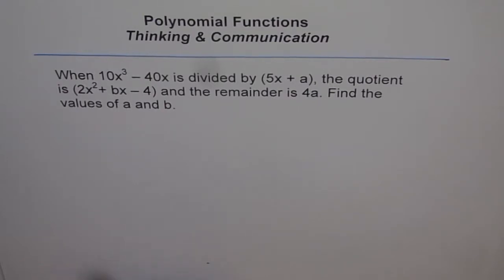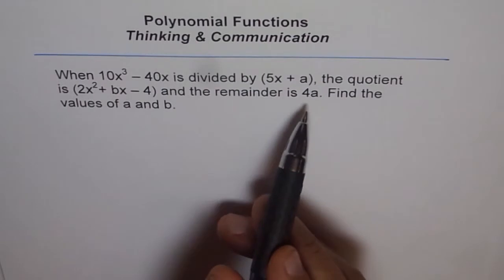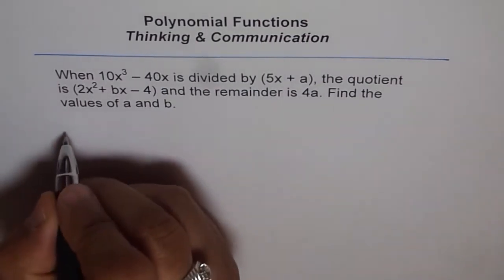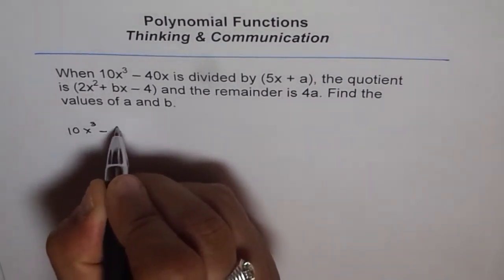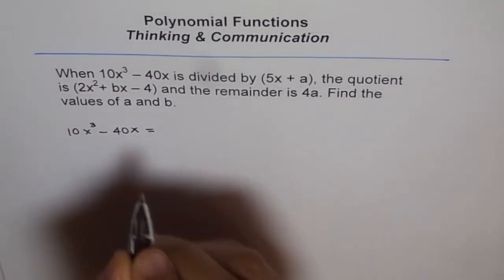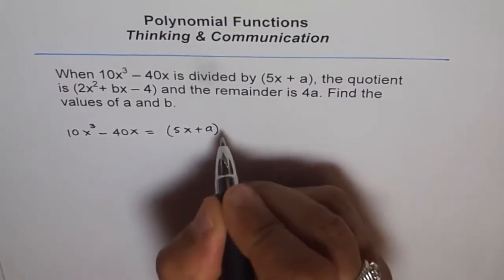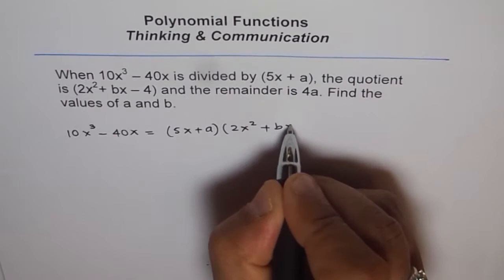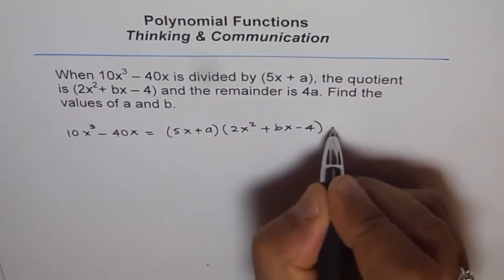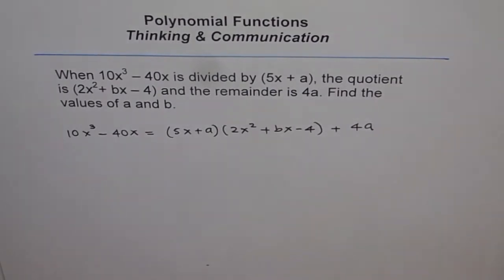Let's use the division statement. When this is divided by this, quotient is this and remainder is that. That means our equation is that 10x³ - 40x is equal to (5x + a) times (2x² + bx - 4) plus the remainder, which is 4a. So that is our division statement.